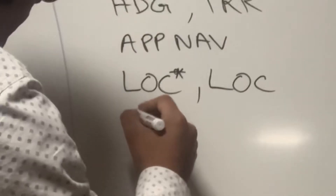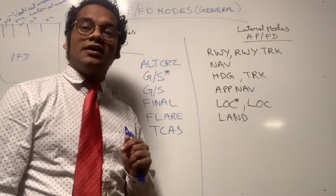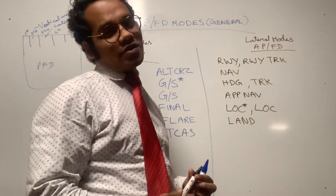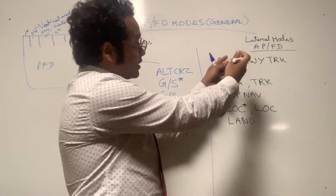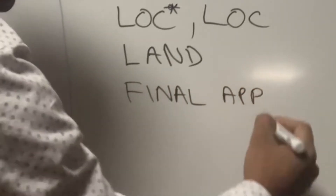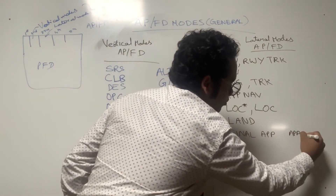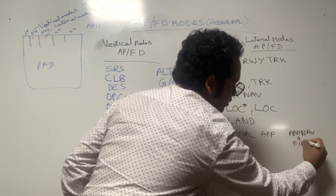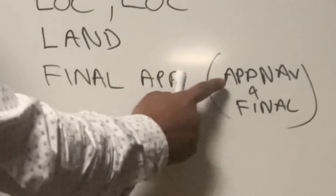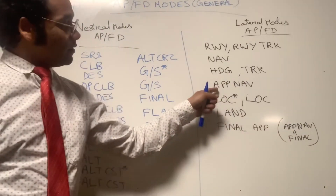LOC on its own means localizer track mode. The next FMA is LAND, which means the aircraft is in land mode. This land mode is basically a managed mode that includes glide slope and localizer below 400 feet radio altitude. Next is FINAL APP — final approach mode — which is a managed sub-mode that includes approach nav and final during a non-precision approach.